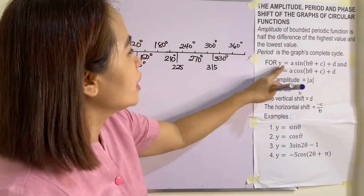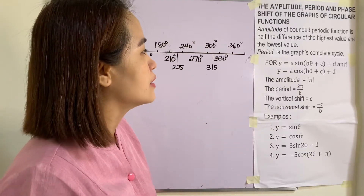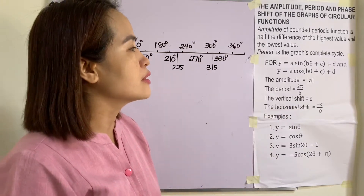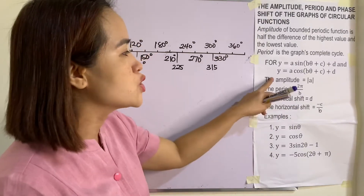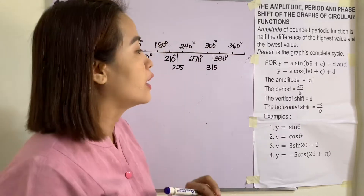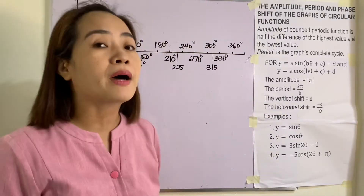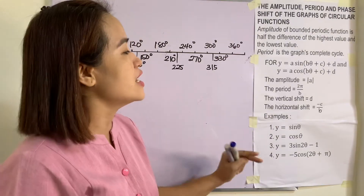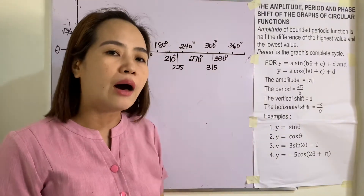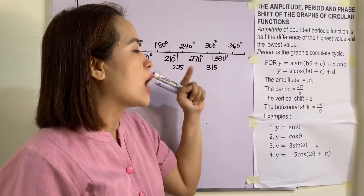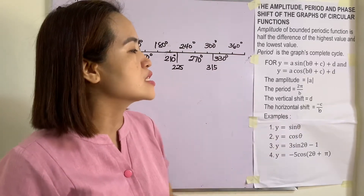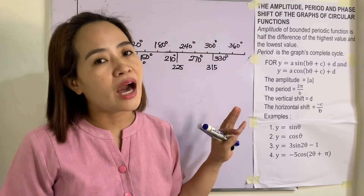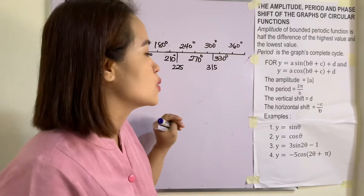For y = A·sin(Bθ + C) + D and y = A·cos(Bθ + C) + D, the amplitude equals the absolute value of A, the period is 2π over B, the vertical shift is D (negative D means shift down, positive D means shift up), and the horizontal shift is negative C over B (negative means shift left, positive means shift right).